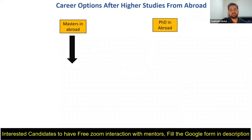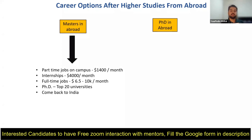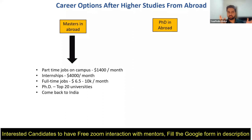Once you take this education loan and come to the US, during your first and second semesters, students generally go for part-time jobs. In the US you are allowed to work only on campus. From these on-campus part-time jobs, students can earn around $1400 per month on average. This data was collected by talking to students.